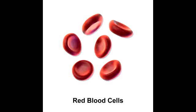A reticulocyte is an immature erythrocyte and is a marker for erythroid proliferation, meaning the body is actively making new red blood cells. If erythrocytes are dying and new reticulocytes are being made, this is a good sign. However, if many erythrocytes are dying and the reticulocyte count is normal, this can indicate a problem with erythropoiesis.